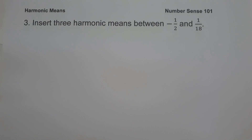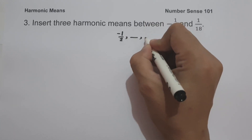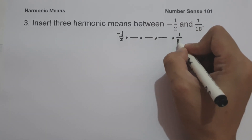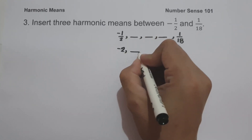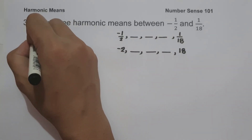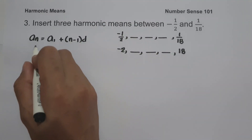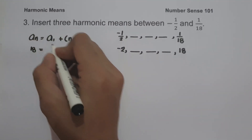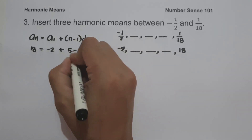On example number 3, insert 3 harmonic means between negative one half and one over 18. Illustrating: negative one half, then three numbers to insert, then one over 18. Just like example 2, let us find the reciprocals. The reciprocal of negative one half is negative 2, and the reciprocal of one over 18 is 18. Using the arithmetic sequence formula: a sub n equals a sub 1 plus quantity n minus 1 times d, with 5 terms total.